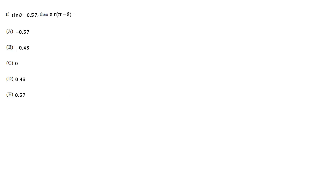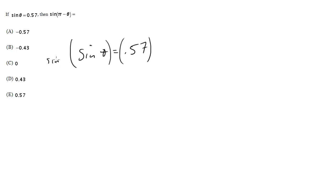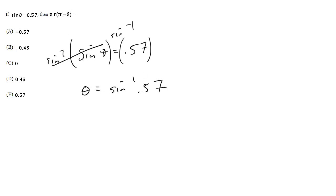The best way, the most reliable way, is to just brute force it. Use your calculator. We can find theta by doing the inverse sine, since we know that the sine of theta is 0.57. We can inverse sine both sides, and we're left with theta equals the inverse sine of 0.57, which we can find. Once we find that theta, we plug it into this expression and we get our answer.